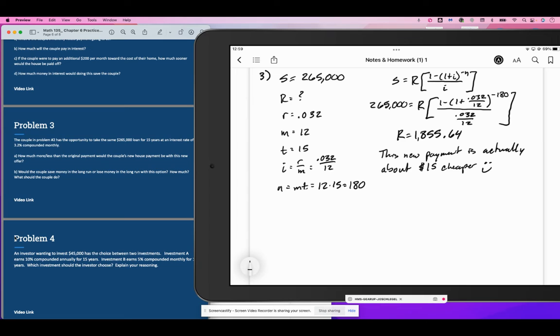The total payoff would be 1855.64 times 12 times 15. It would cost them $334,015.20 to get this paid off.